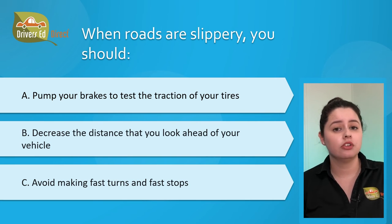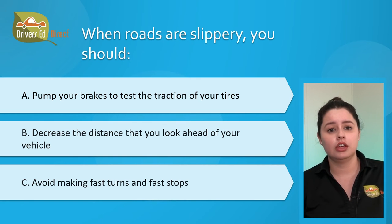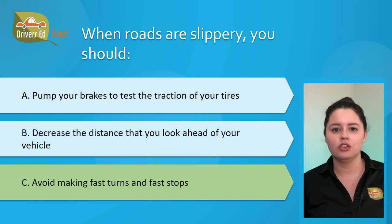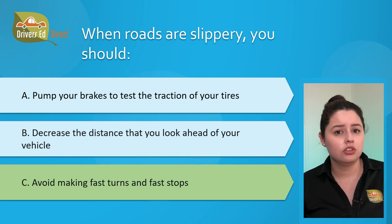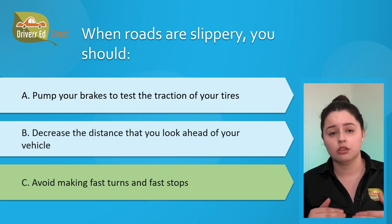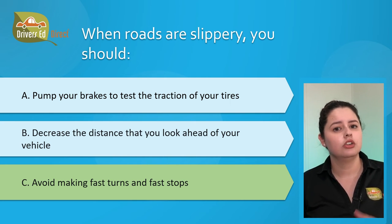Question number seventeen: when roads are slippery, you should: A) pump your brakes to test the traction of your tires, B) decrease the distance you look ahead of your vehicle, or C) avoid making fast turns and fast stops. The correct answer is C, avoid making fast turns and fast stops. On a wet or slippery road it takes twice as long to stop than on a dry road, so keep your speed below dry road speeds — a minimum of 5 to 10 mph slower. Slow down well in advance when approaching sharp curves.